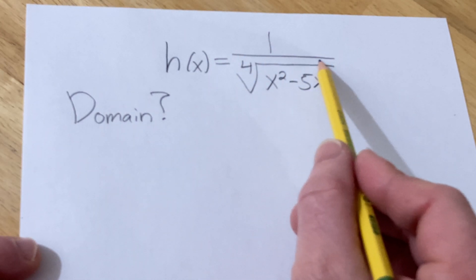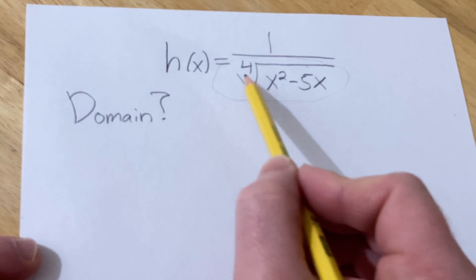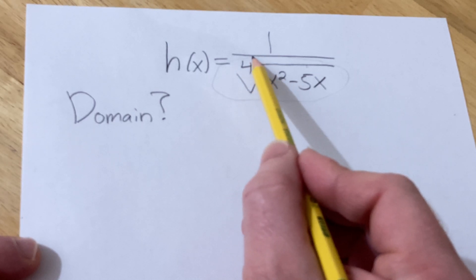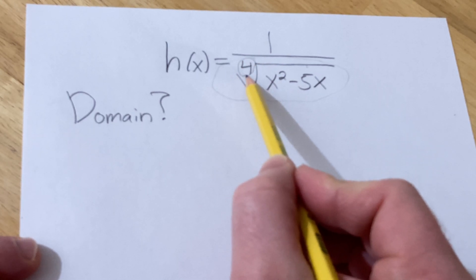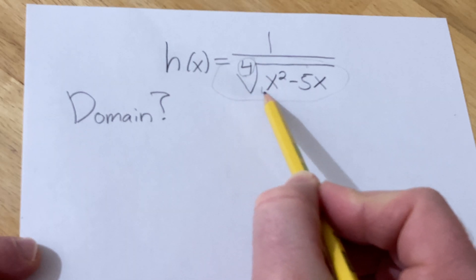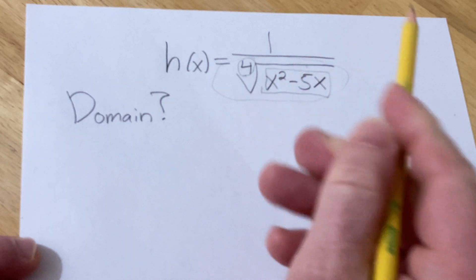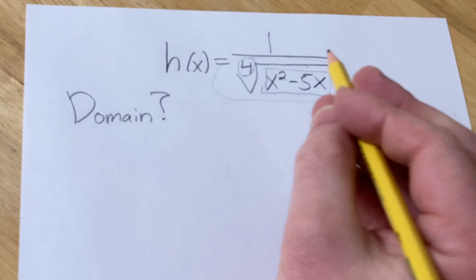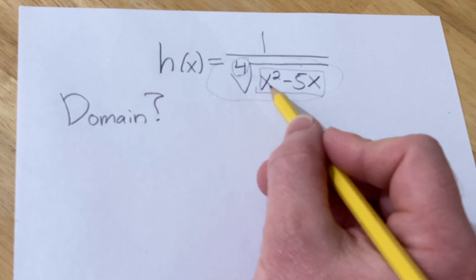We have a fraction, so the bottom can't be zero. We also have a fourth root, and this is called the index. Whenever the index is even, whatever is inside can't be negative. In other words, it has to be greater than or equal to zero.